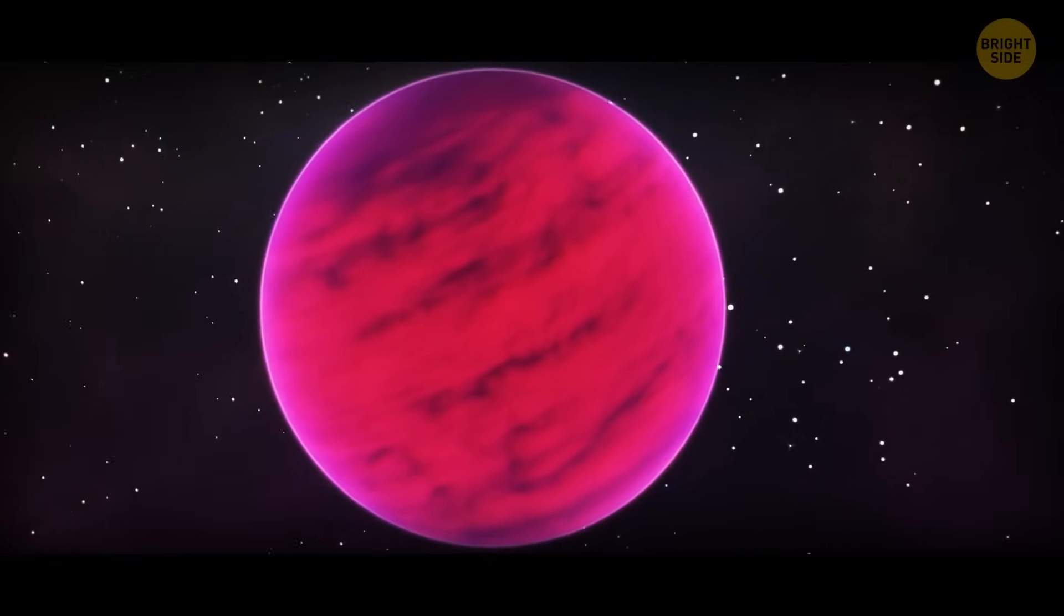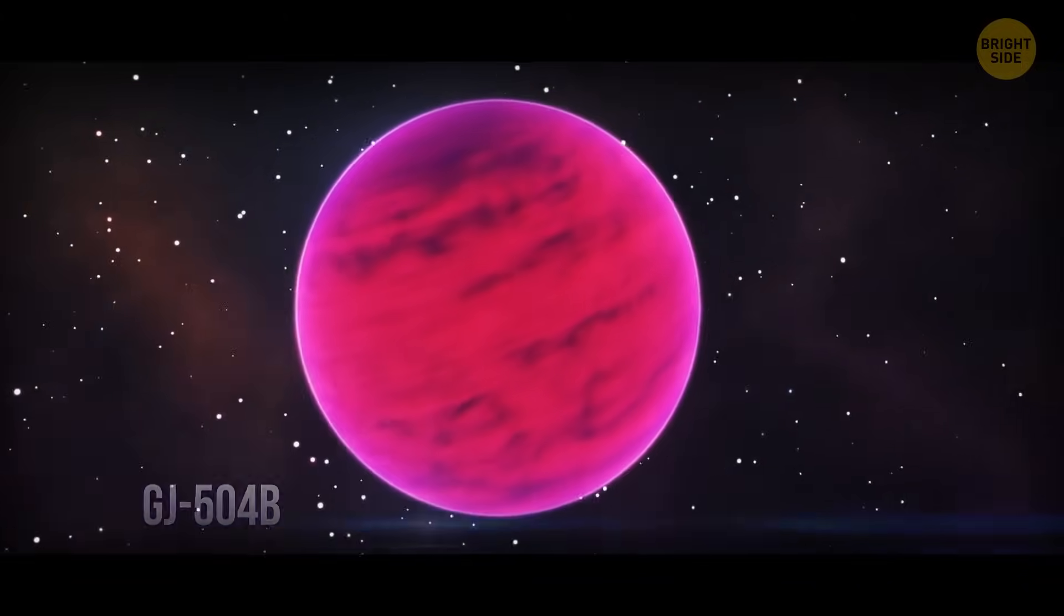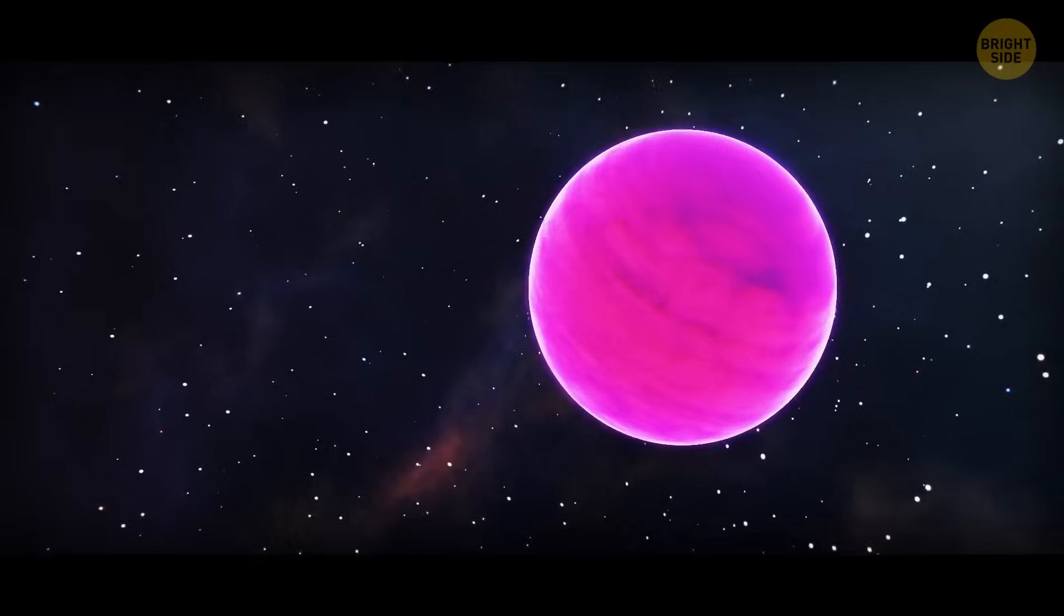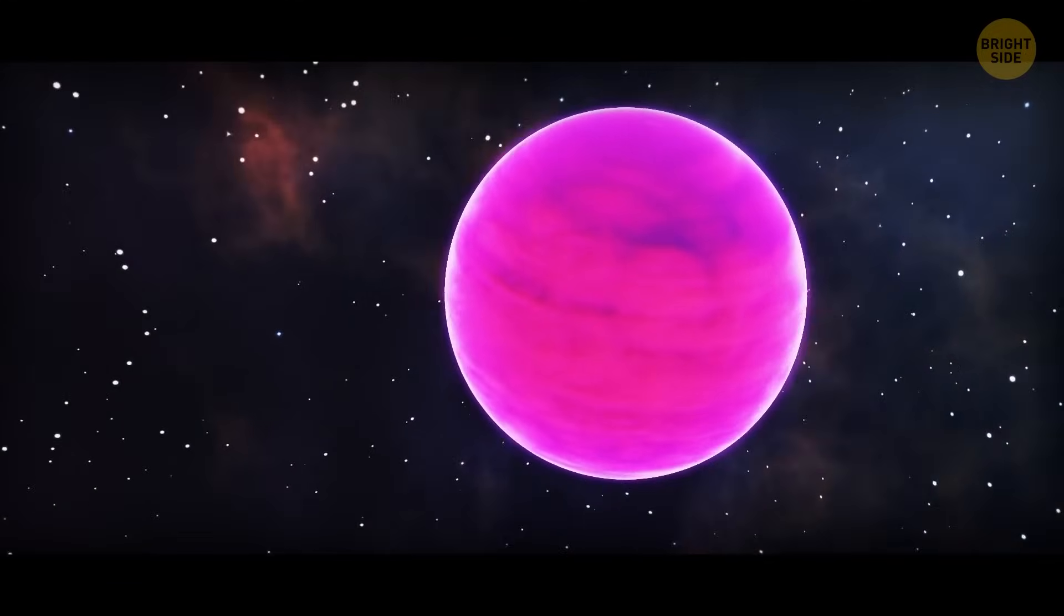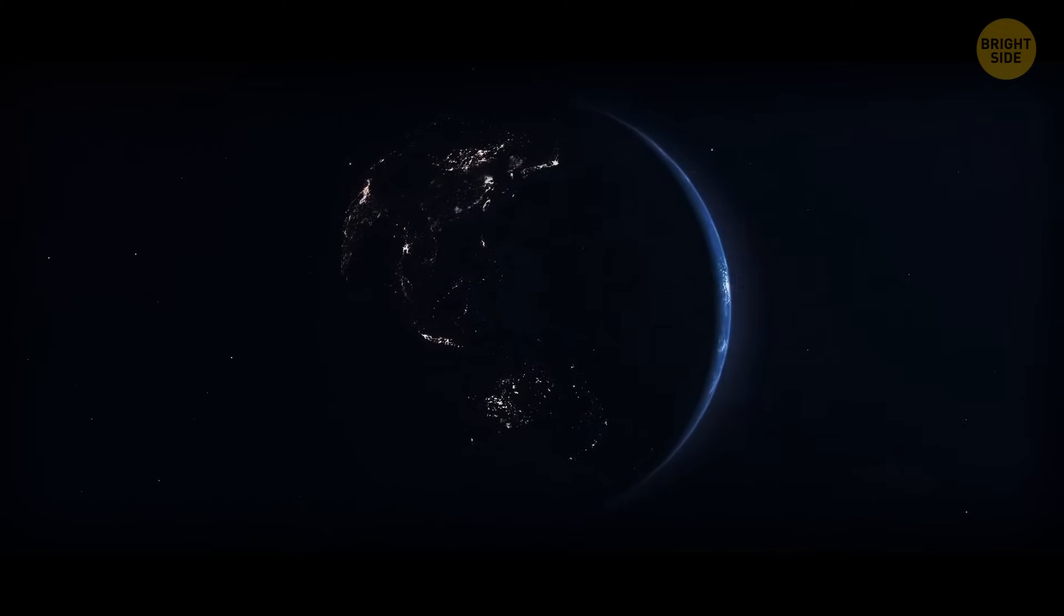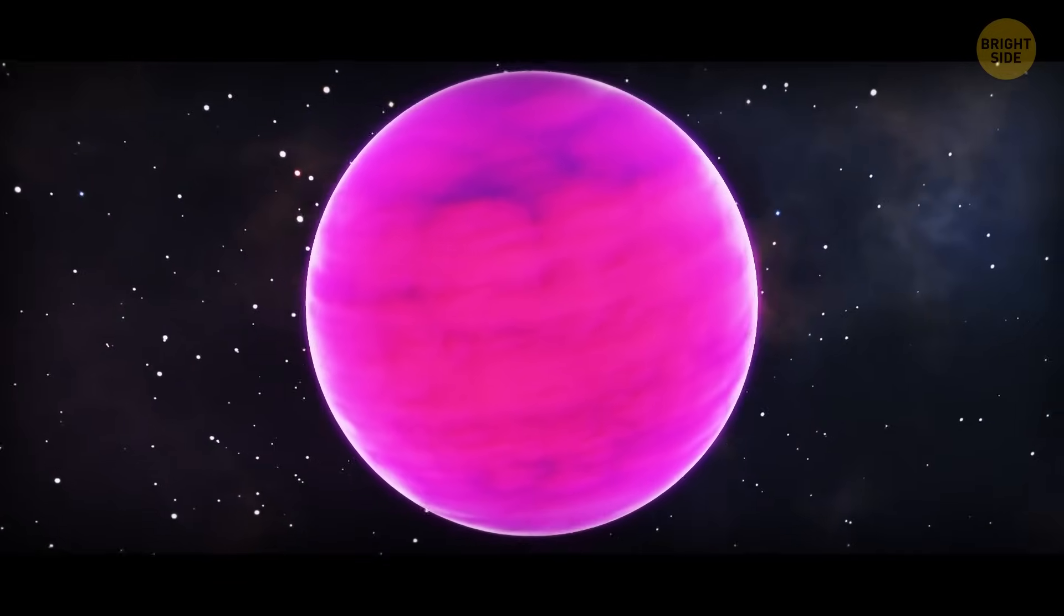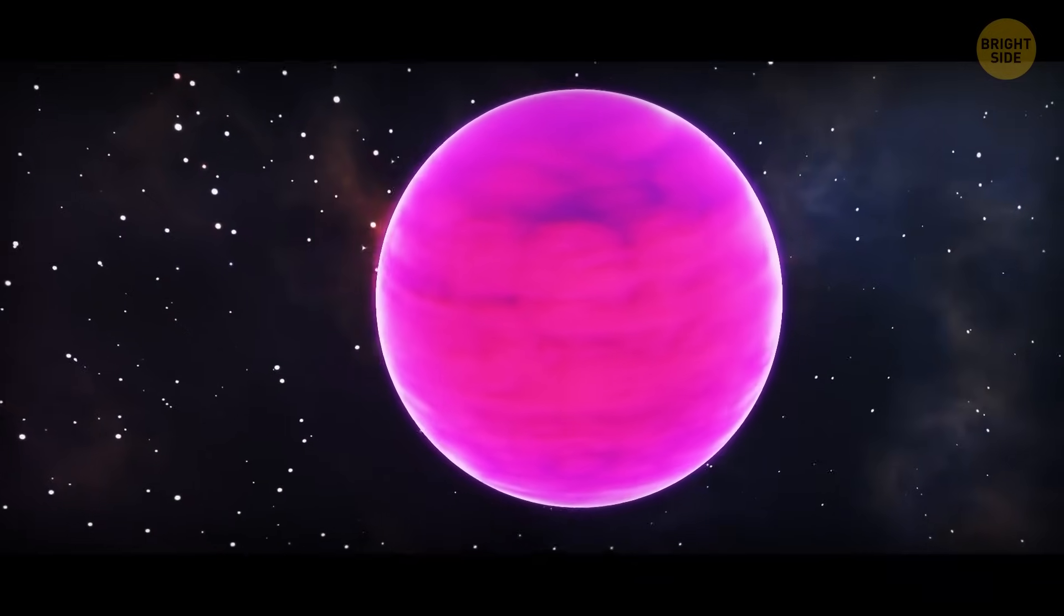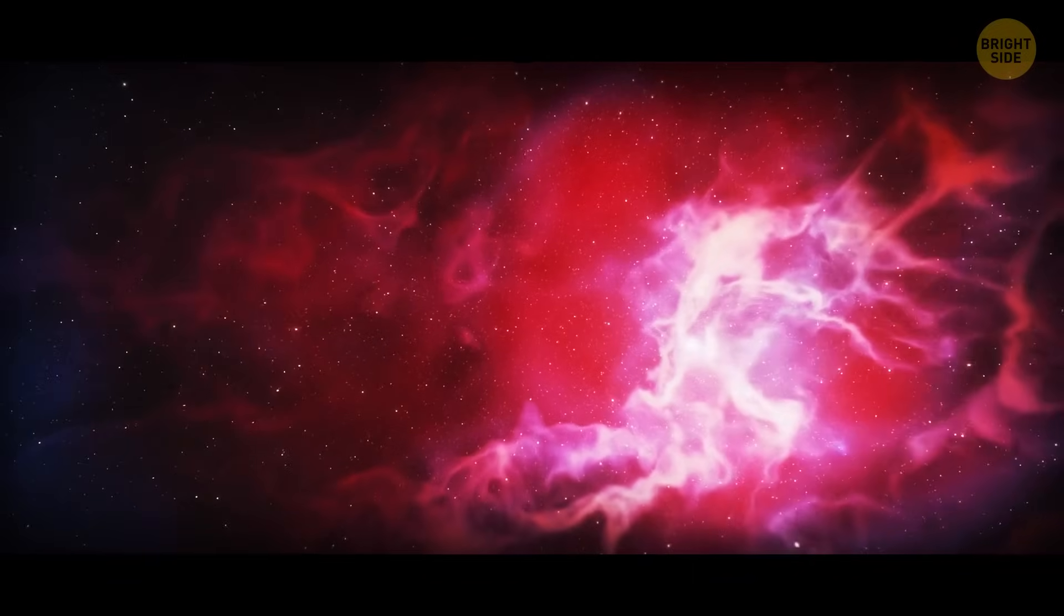And then there's a pink planet, GJ504b, far away from us, in the Virgo constellation, four times more massive than Jupiter. It's a newly formed exoplanet, around 160 million years old. By comparison, the Earth is 4.5 billion years old. If we could go there, we would see an incredible world that glows from the heat of its formation. Everything around you would be colored magenta.